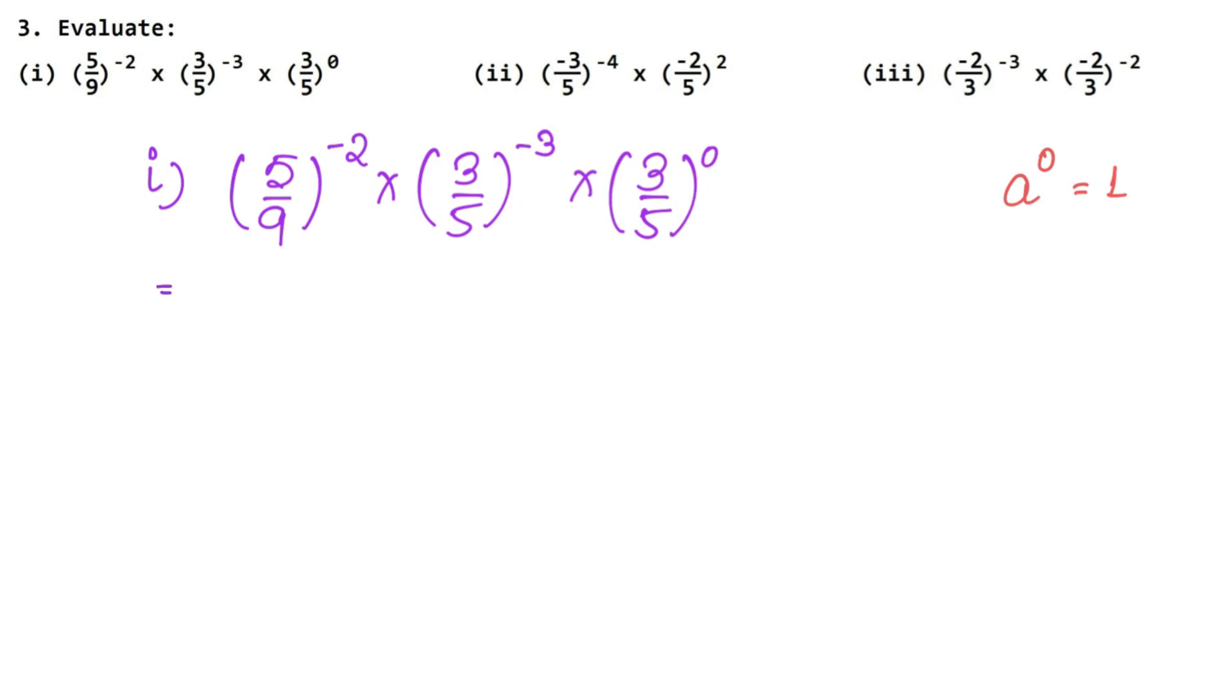The power of any power 0 means 1. So that means 3 upon 5 power 0 means 1. So what can we write this? 5 upon 9 power minus 2 into 3 upon 5 power minus 3 into 1. Now, what will we do with minus power?